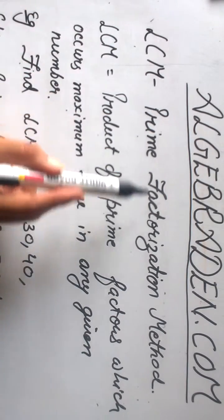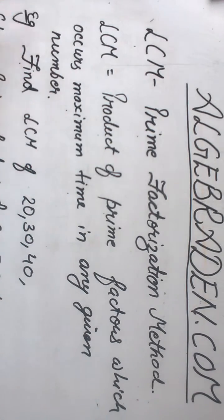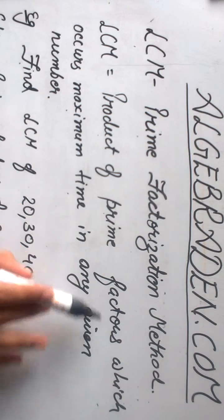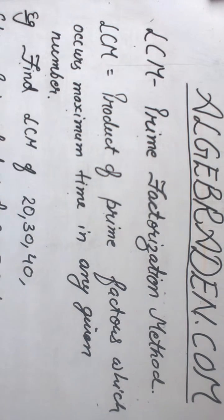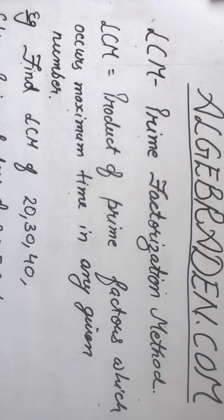Calculate LCM by prime factorization method. LCM is product of prime factors which occurs maximum time in any given number. To understand this, let's have an example.